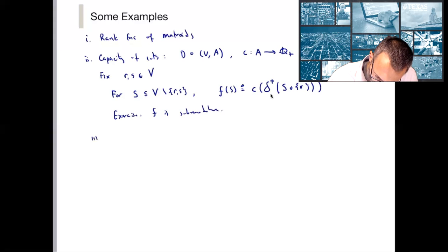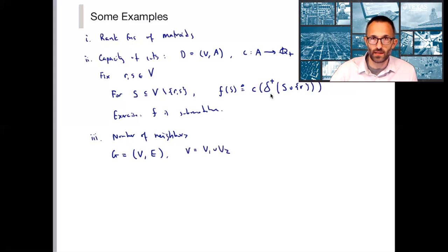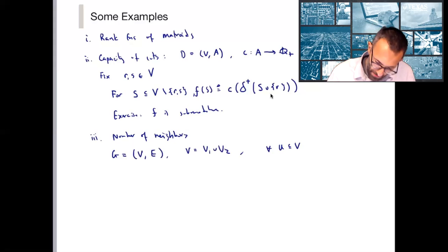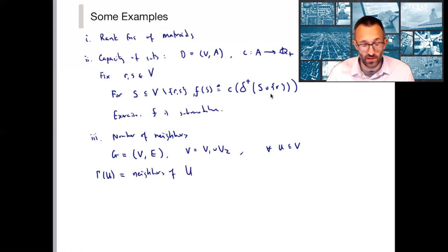Another example is the number of neighbors in a bipartite graph. So let G be some bipartite graph, V and E. V is equal to V1 union V2 and E goes from V1 to V2, not directed. So this is a bipartite graph. And for any subset U of V, let gamma of U denote the neighbors. Therefore cardinality of gamma of U is the number of neighbors.